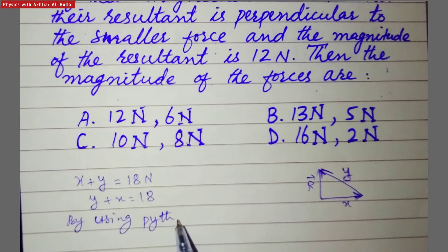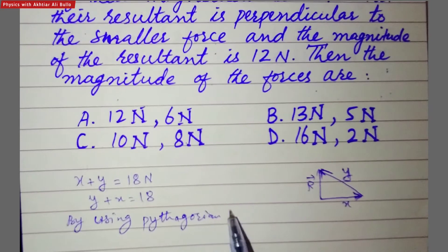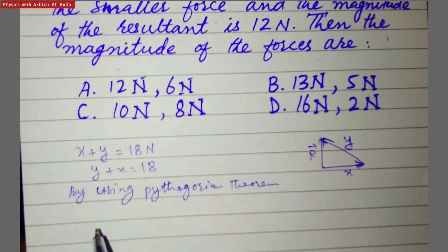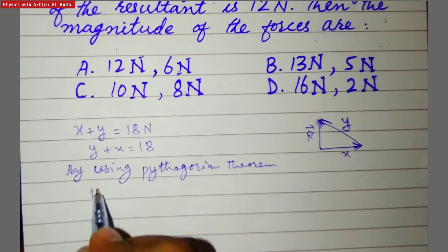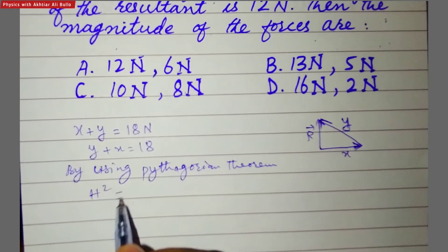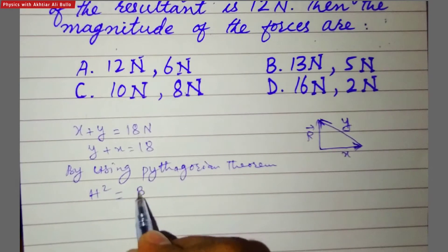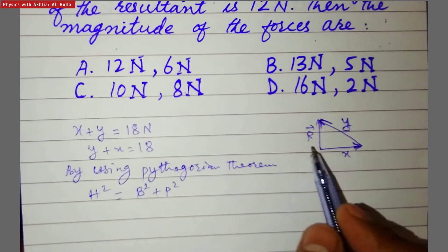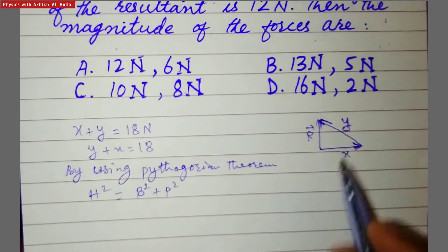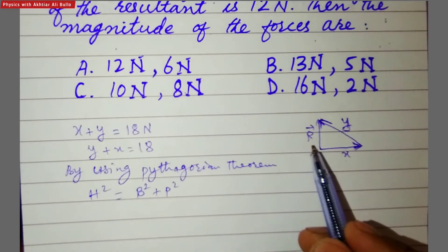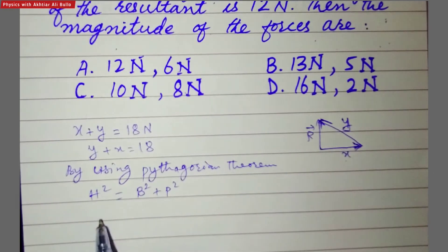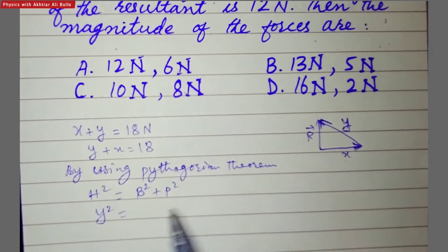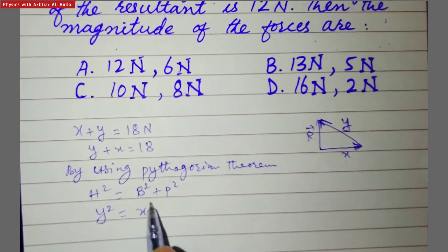We solve this by using the Pythagorean theorem, which is h squared equals b squared plus p squared. Here the hypotenuse is y, the base is x, and the perpendicular is r, so y squared is equal to x squared plus r squared.